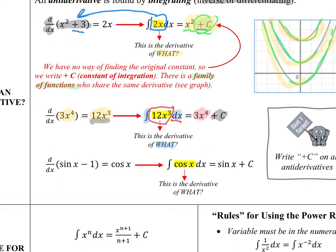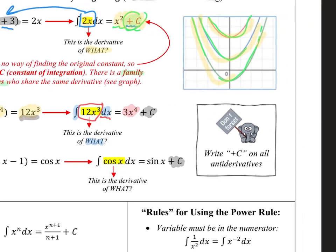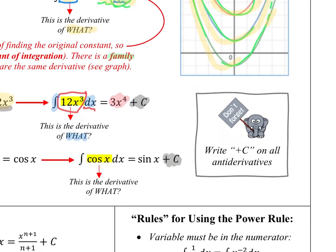Another example involving trig: the derivative of sine x minus 1 — the derivative of sine x is cosine x. So if asked for the antiderivative of cosine x dx, the answer is sine x plus c. A reminder: don't forget that plus c. Whenever you have an antiderivative, as noted by an integral sign with no limits on it, you must remember to write plus c on all of them.